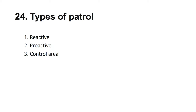Types of patrols — there are five types: reactive, proactive, control area, random, and direct. Reactive patrol: something happens and you go on patrol. Proactive patrol: nothing has happened but you go to observe any unusual activities. Control area: a routine patrol to dominate the area and ensure it is under security control. Random patrol: no fixed time, you go whenever you decide. Direct patrol: someone such as a controller, supervisor, or manager directs you to do the patrol.